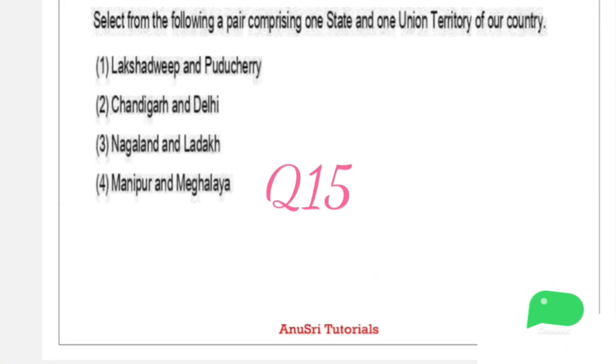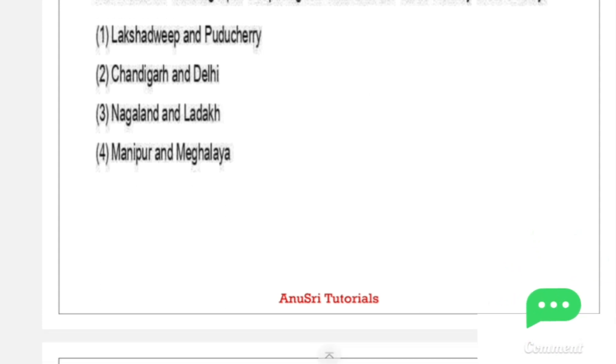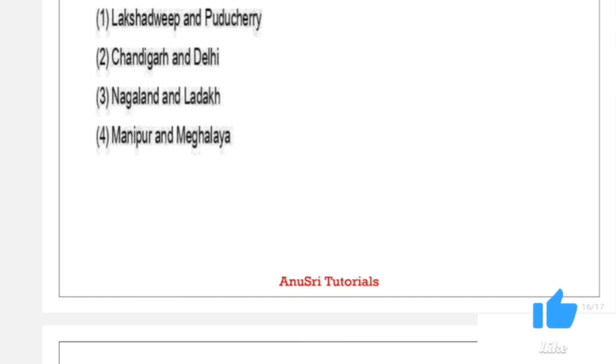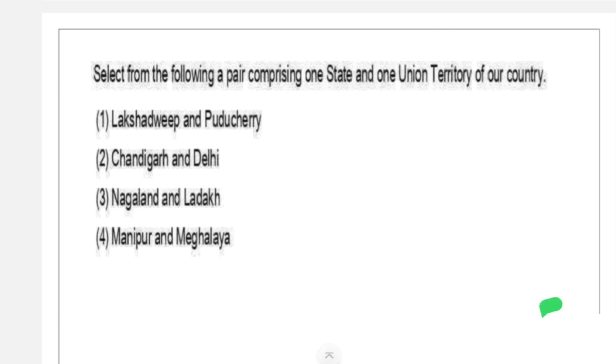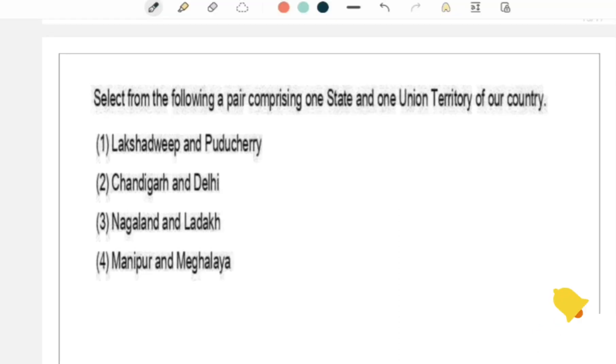Which are comprising one state and one union territory of our country? First option is Lakshadweep and Puducherry - these are union territories. Second option is Chandigarh and Delhi - these are two union territories. Third option: Nagaland and Ladakh - one state and one union territory. Fourth option is Manipur and Meghalaya - these are two states. My question is one state and one union territory, so the answer is Nagaland and Ladakh.